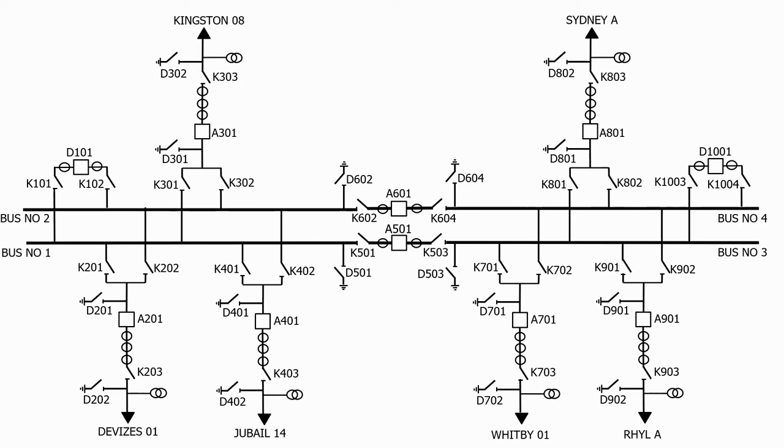Let's now look at a double buzz bar substation. Here's a substation with 4 buzz bars, 2 incomers and 4 feeders. Let's now see what protection zones we define for this type of substation.